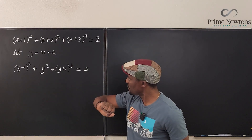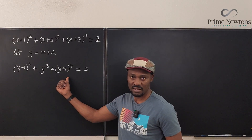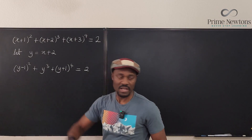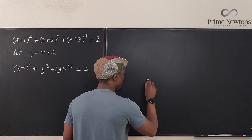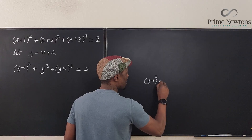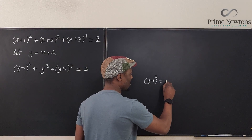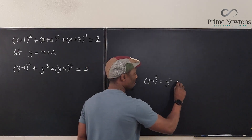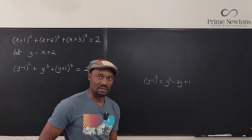So what should we do? We need to expand (Y minus 1) squared and (Y plus 1) to the fourth. The expansion of (Y minus 1) squared is just foiling — it's a quadratic, so we square it: Y squared minus 2Y plus 1. We're done with that one.